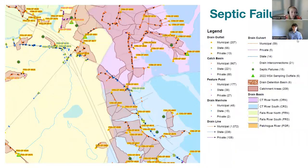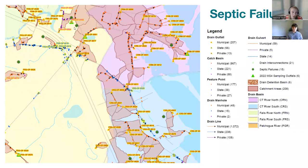Moving on to septic failures — this map is for Essex, showing their drainage data. The town of Essex is unique in that they have no town sanitary system; everybody is on a septic. It's very important to know where any failures or breaks are in those septic systems, as they are right on the Connecticut River. The darker green triangles are MS4 permit sampling locations, and several septic failures are located around those outfalls. When they do testing and sampling of the water, they can identify contaminants that may have come from those failed systems.